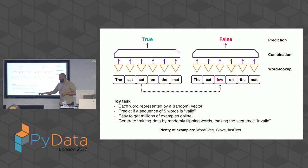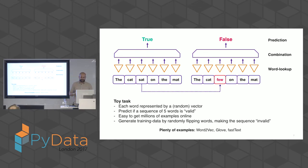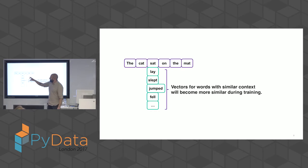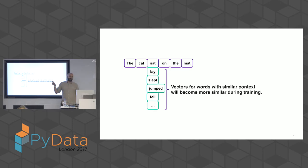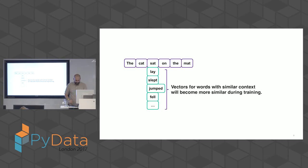Word2vec, GloVe, FastText — they all share the approach of using a simple task to learn good representations. What actually happens when you train this? In a sentence like 'the cat sat on the mat', there are a finite number of words that make sense in the spot 'sat': lay, slept, jumped, and so forth. The only way the model can solve this is by making sure all words that would fit there get a similar vector representation. That leads to the interesting property that words with a similar context obtain a similar vector representation.